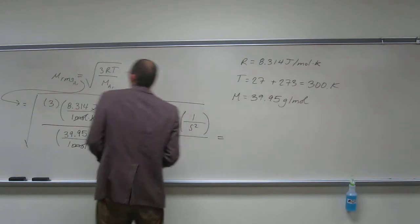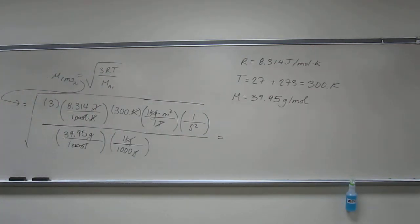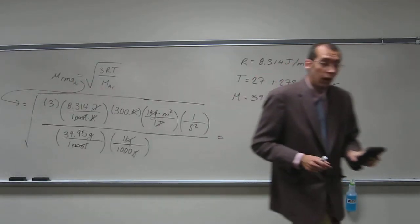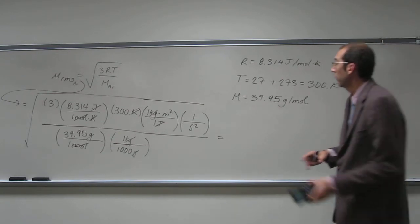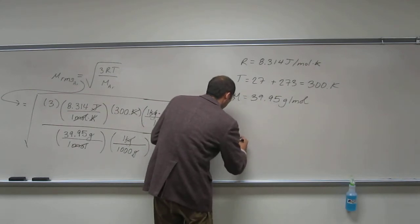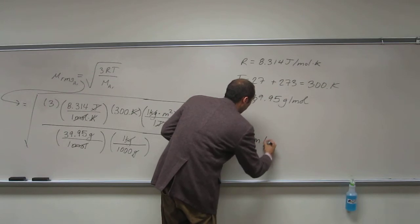Okay. So, now really it's more plug and chug. Let's just multiply this thing out. Three times 8.314 times 300 divided by 39.95. Square root of that. And I got an answer. So, we should do it to three sig figs, right? So, 433 meters per second.